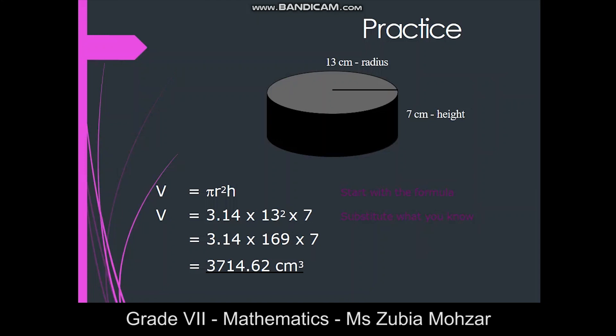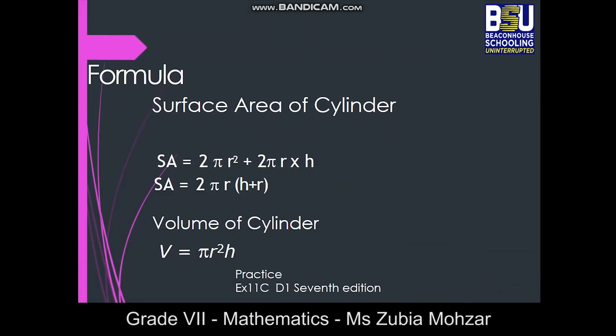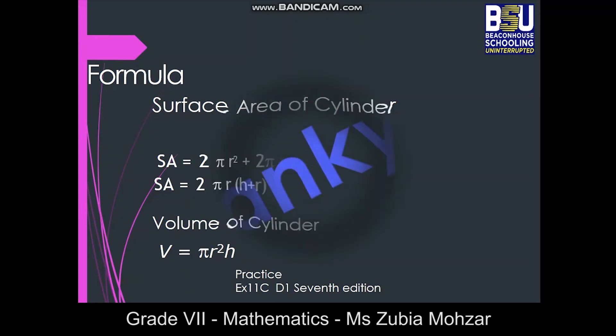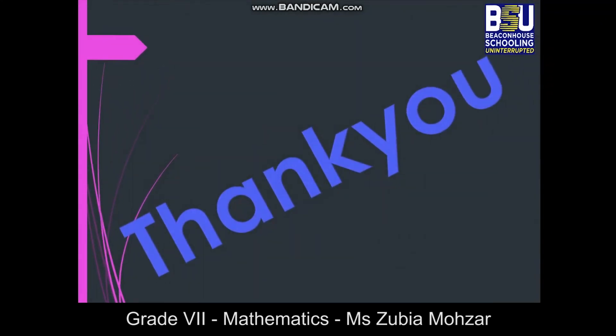Check your answer and don't forget to write the unit — centimeter cube. It is time to revise the formulas. Surface area of a cylinder: 2πr² + 2πrh, or 2πr(h + r), or πdh + 2πr². Volume of a cylinder: πr²h. Dear students, you will practice more questions from exercise 11c. Thank you. In case of any query, you can ask your teachers in your Google Classroom. Meet you in the next session. Goodbye.